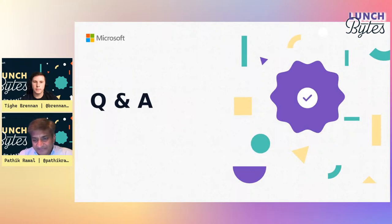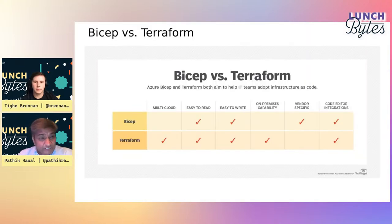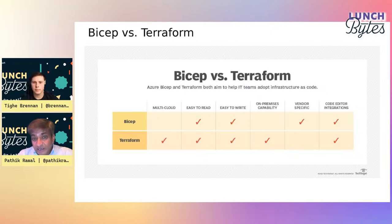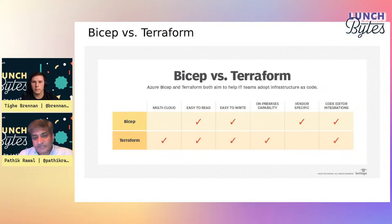I have a comparison slide in the appendix: Bicep versus Terraform. Bicep is not multi-cloud; Terraform is. Both are easy to read and write. Bicep is not yet available for on-premises deployments, though that may come in future. Bicep is vendor-specific to Azure; Terraform is not. Those are the key differences.